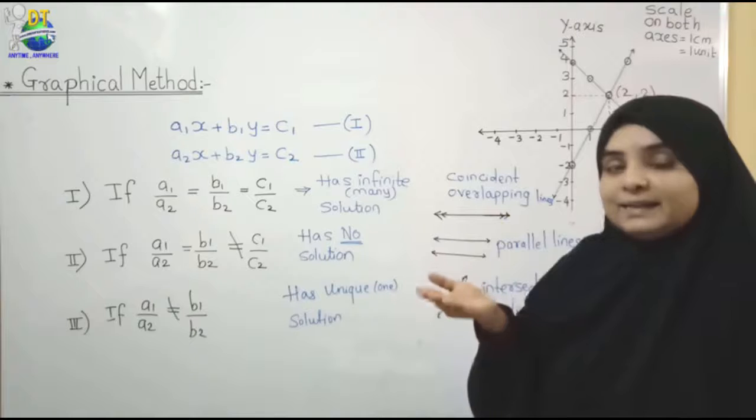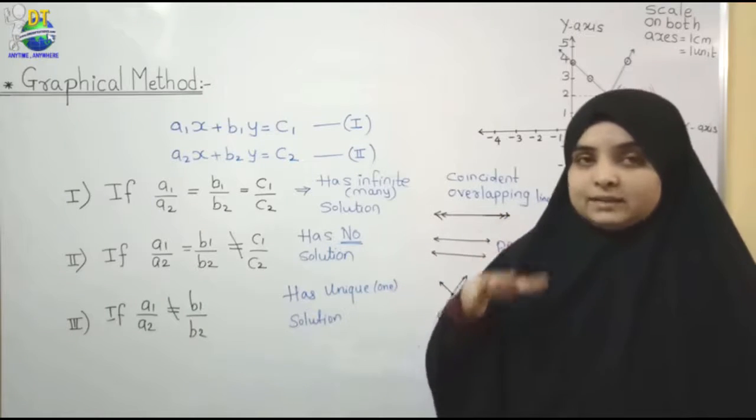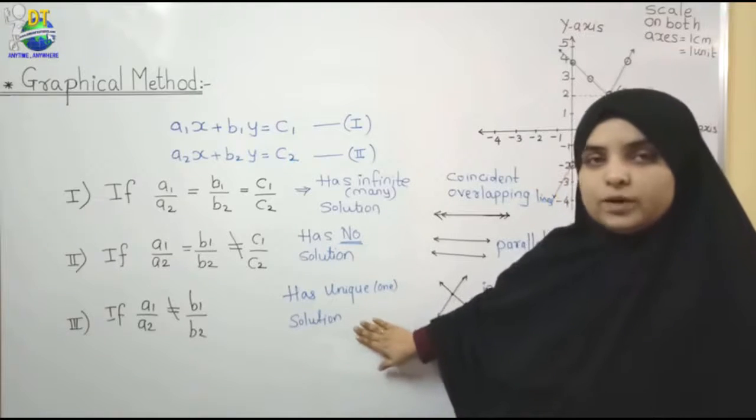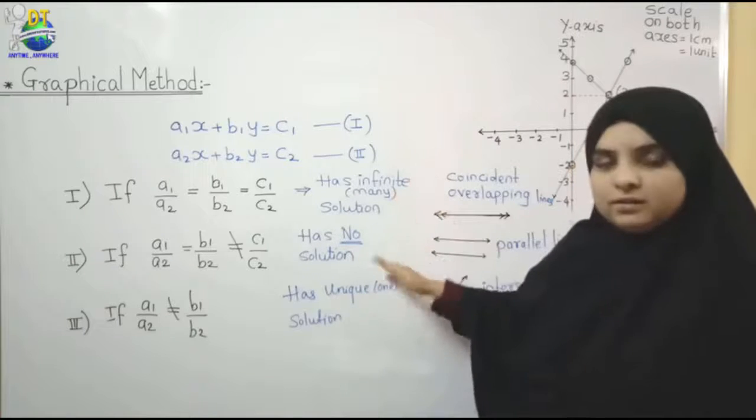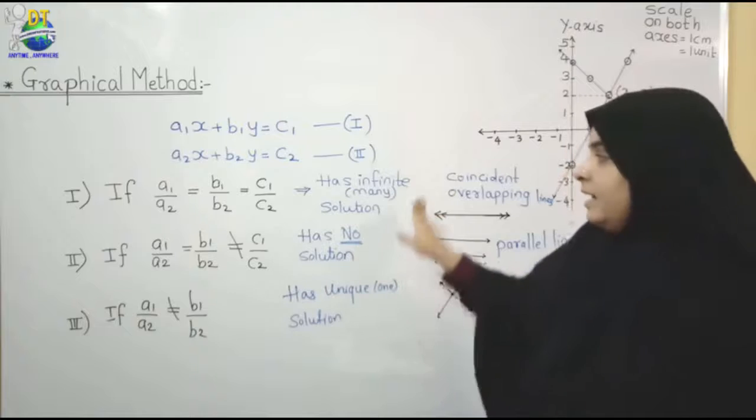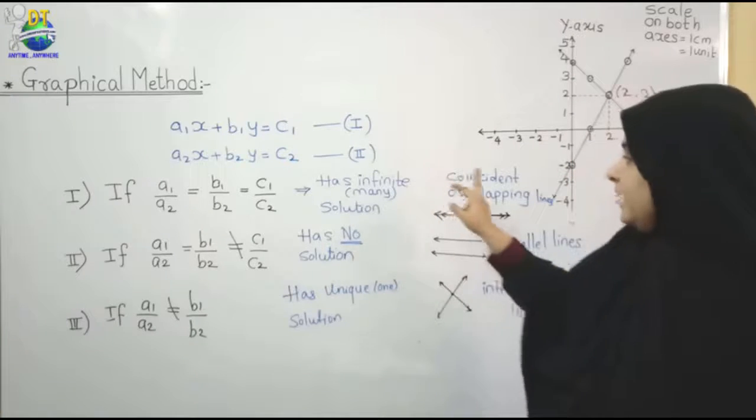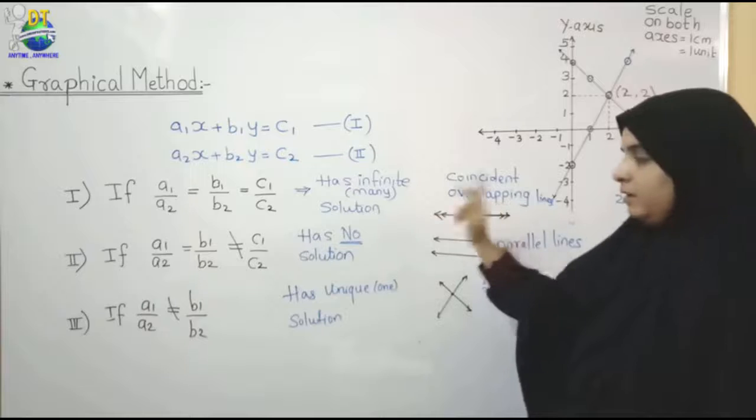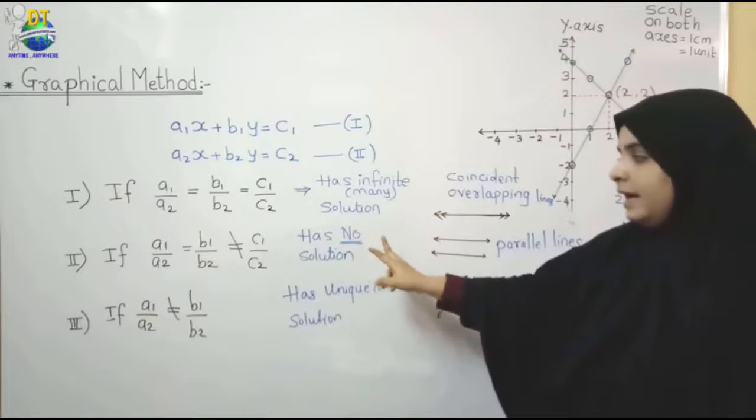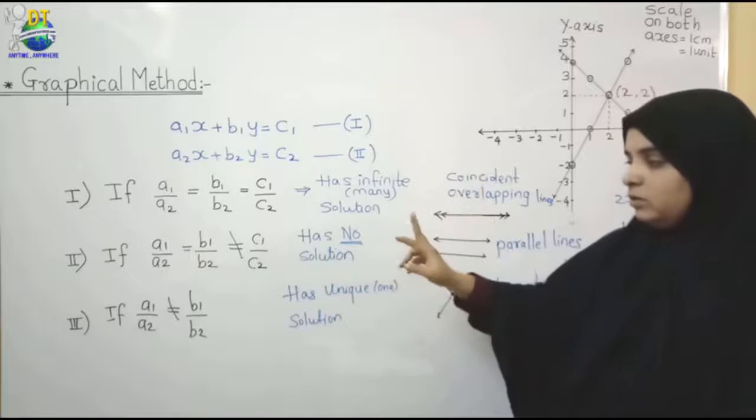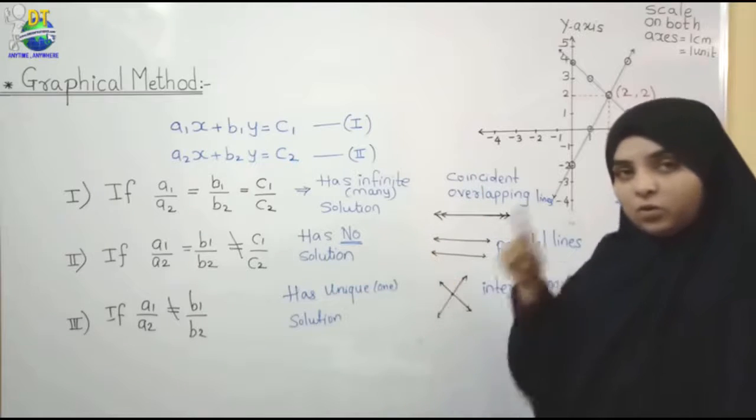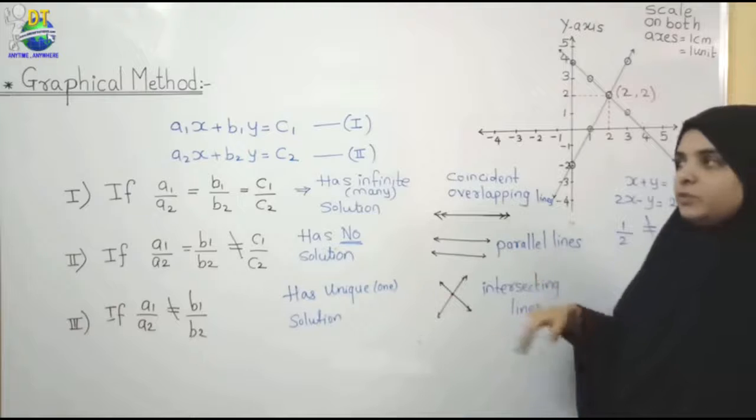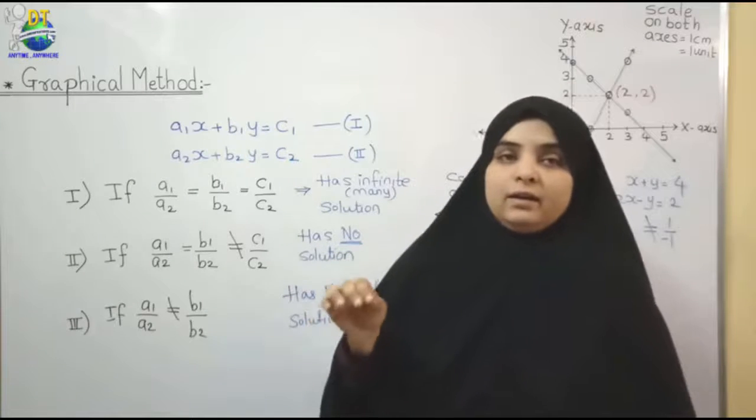Okay, for your knowledge, I have to give you three conditions. This condition, this solution, nature of graph is going to be this. All equal, many solutions overlapping. Only two equal, last one not equal, parallel lines, no solution. First two are not equal, then what? Only one solution, or unique solution, intersecting line. Okay, student? So, in this way, we can plot the point and calculate.